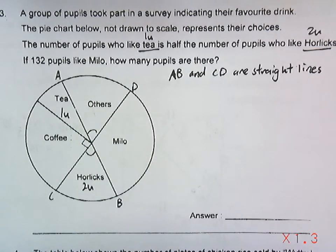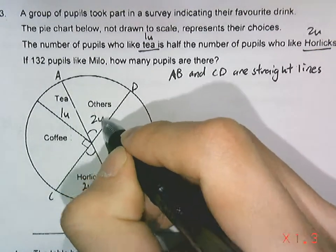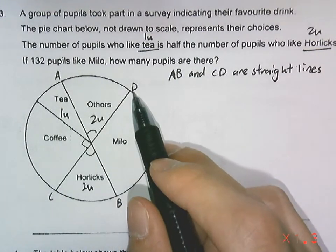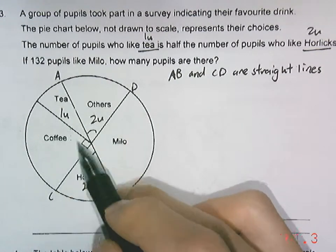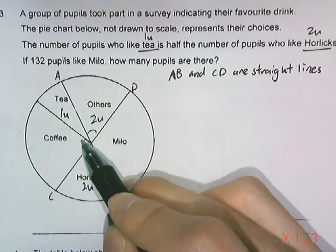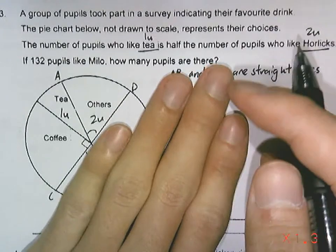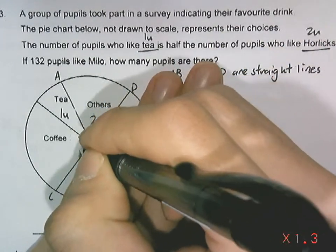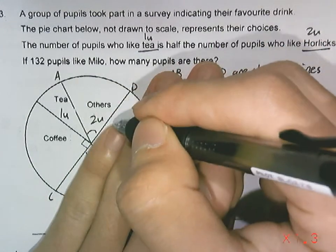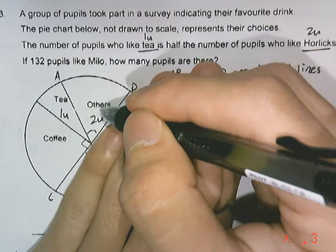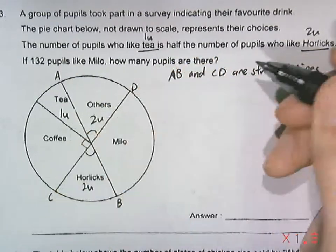Since we say that the angle on the other sector side is the same, this should be two units as well. CD is a straight line. Since this is a straight line and this is 90 degrees, if you cover this part here, this part will be 90 degrees and this part will also be 90 degrees. The tea sector and the other sector would be 90 degrees as well.